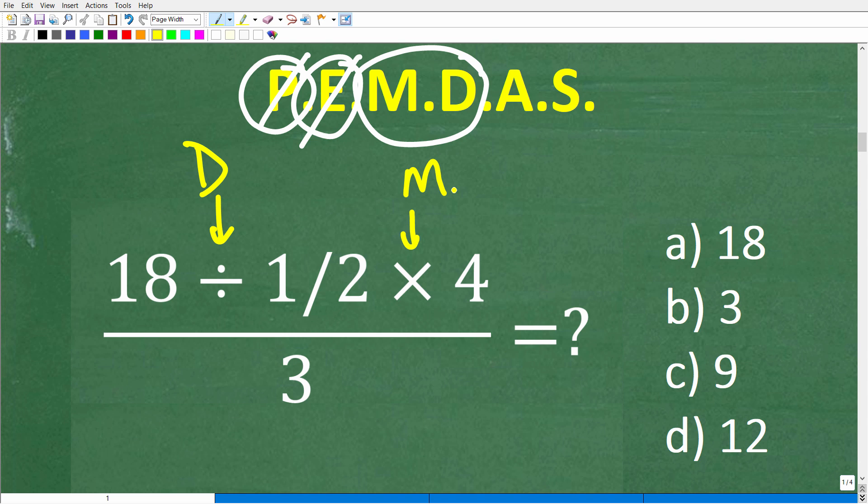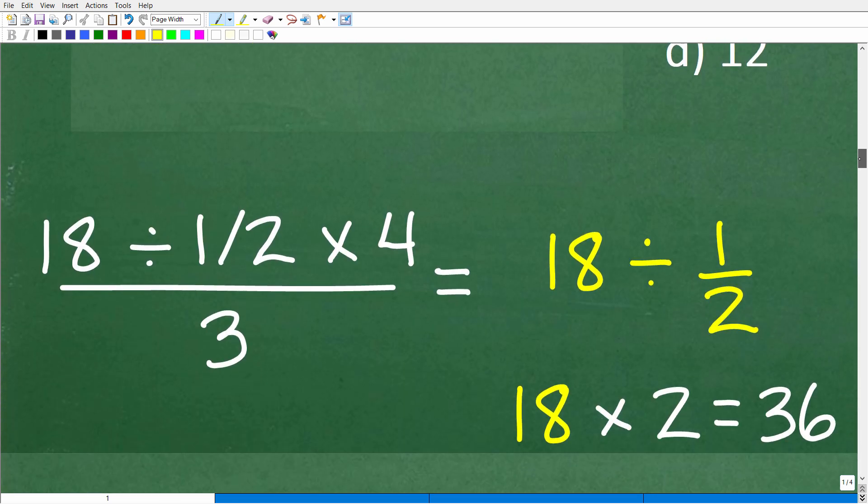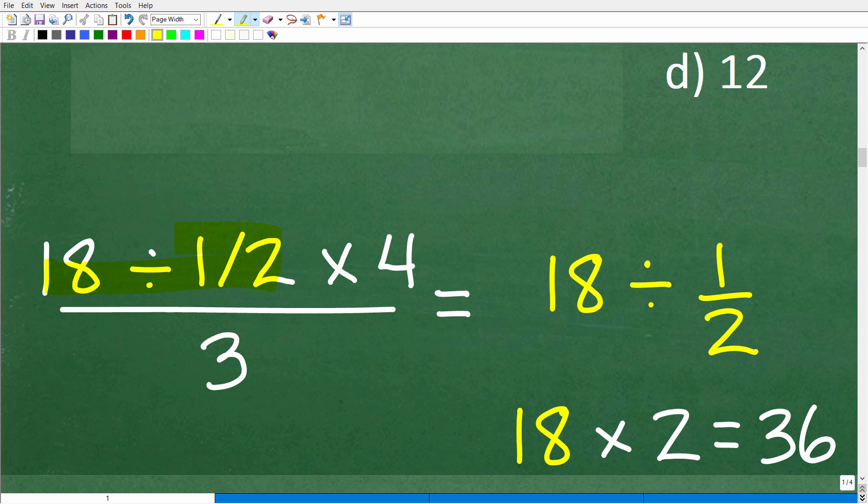So what do we see first from left to right? Well, we see division, right? So we have to do this first. Okay, so 18 divided by 1/2. Obviously, we need to know a thing or two about fractions. So let's go ahead and get into the math right now.